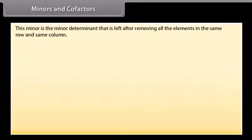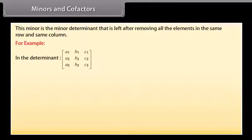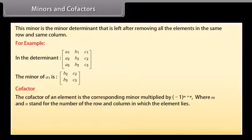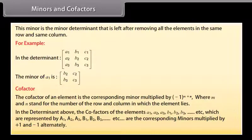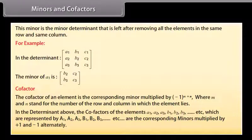Minors and Cofactors: The minor of an element is the determinant left after removing all the elements in the same row and same column as that element. The cofactor of an element is the corresponding minor multiplied by (−1)^(m+n), where m and n are the row and column numbers of the element. The cofactors are the corresponding minors multiplied by +1 and −1 alternately.